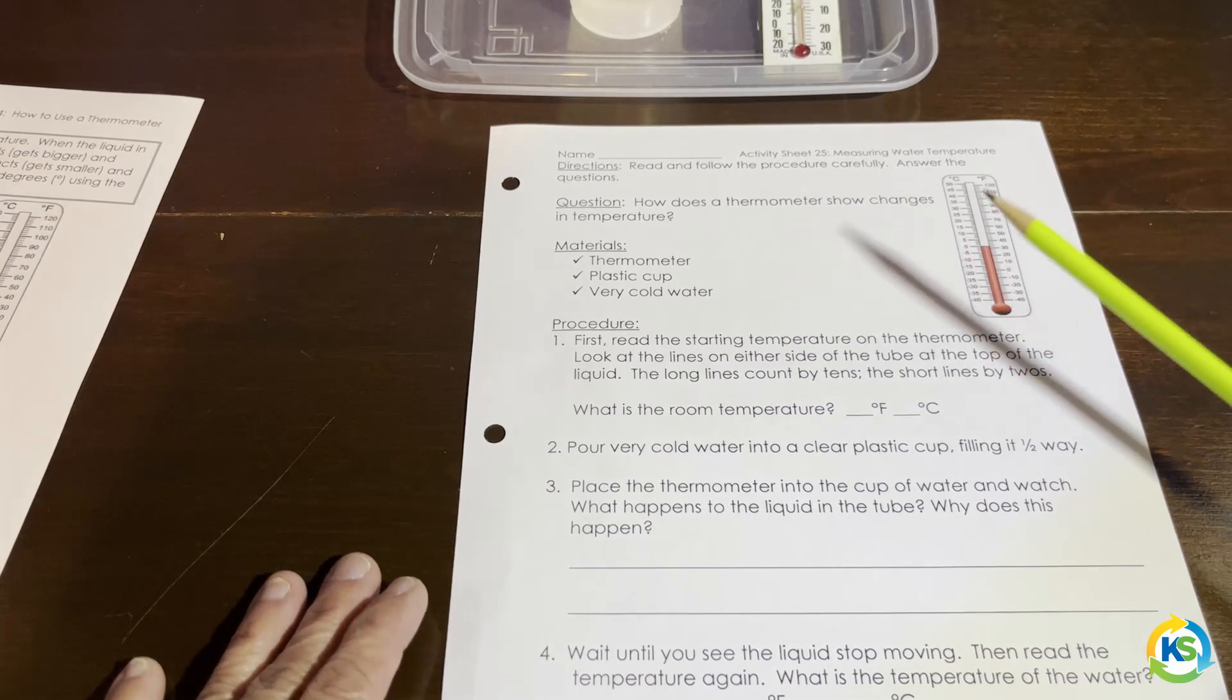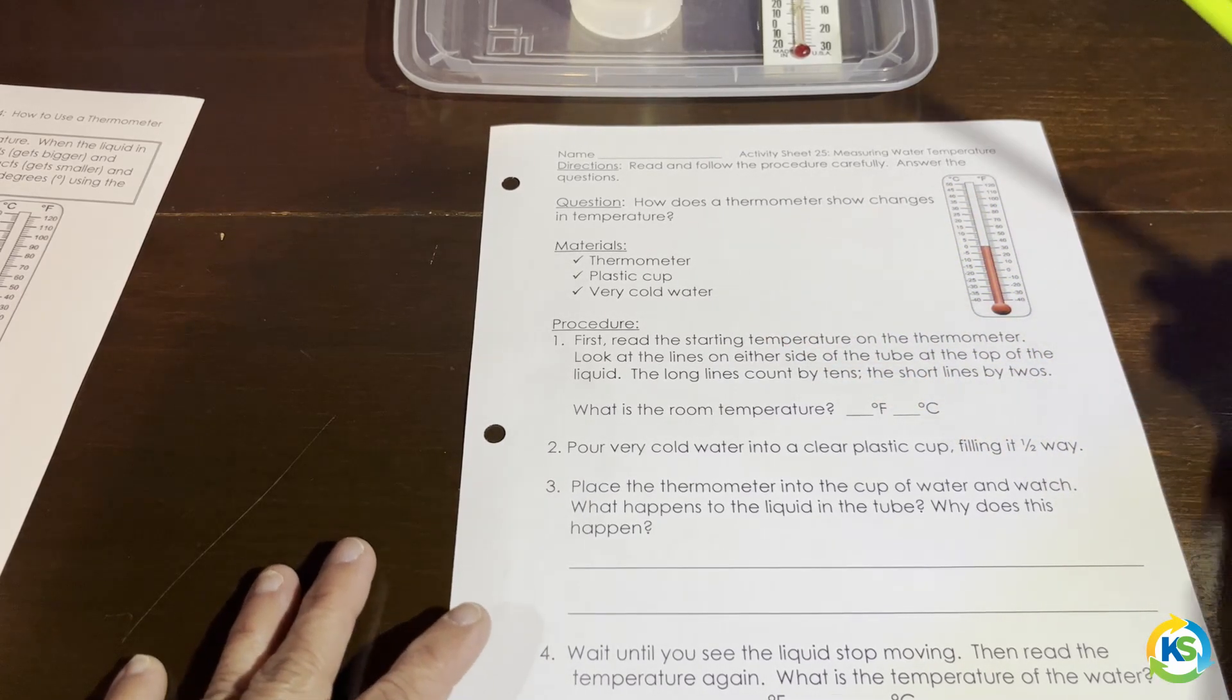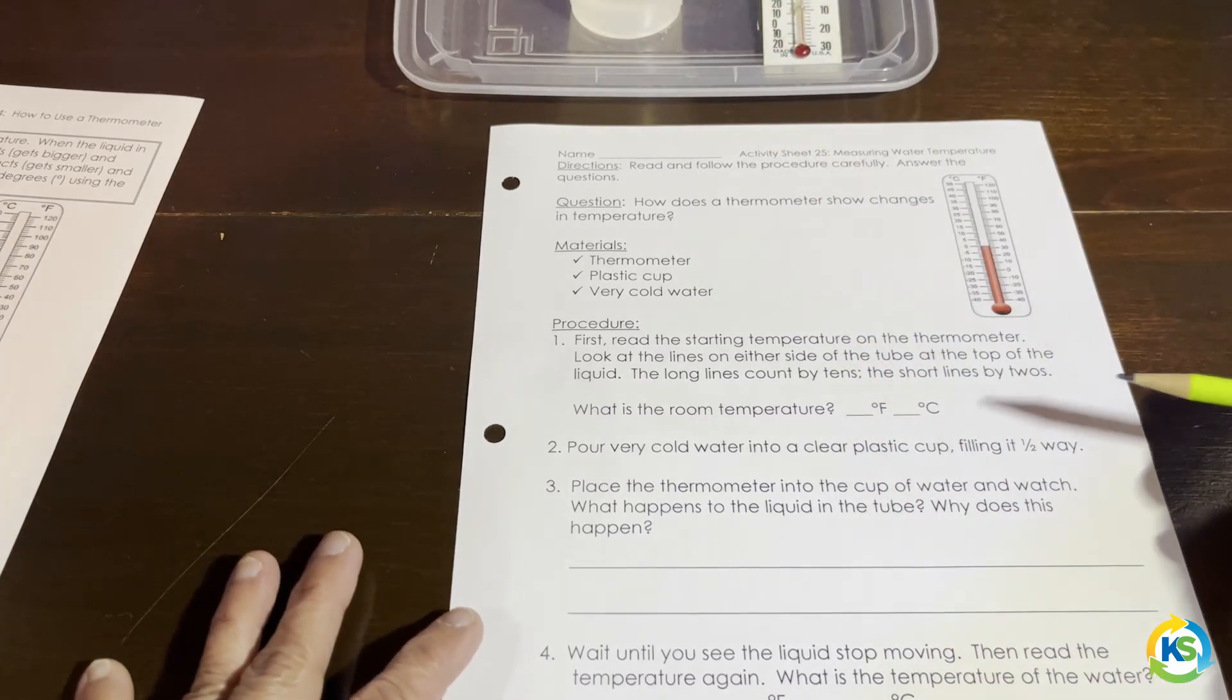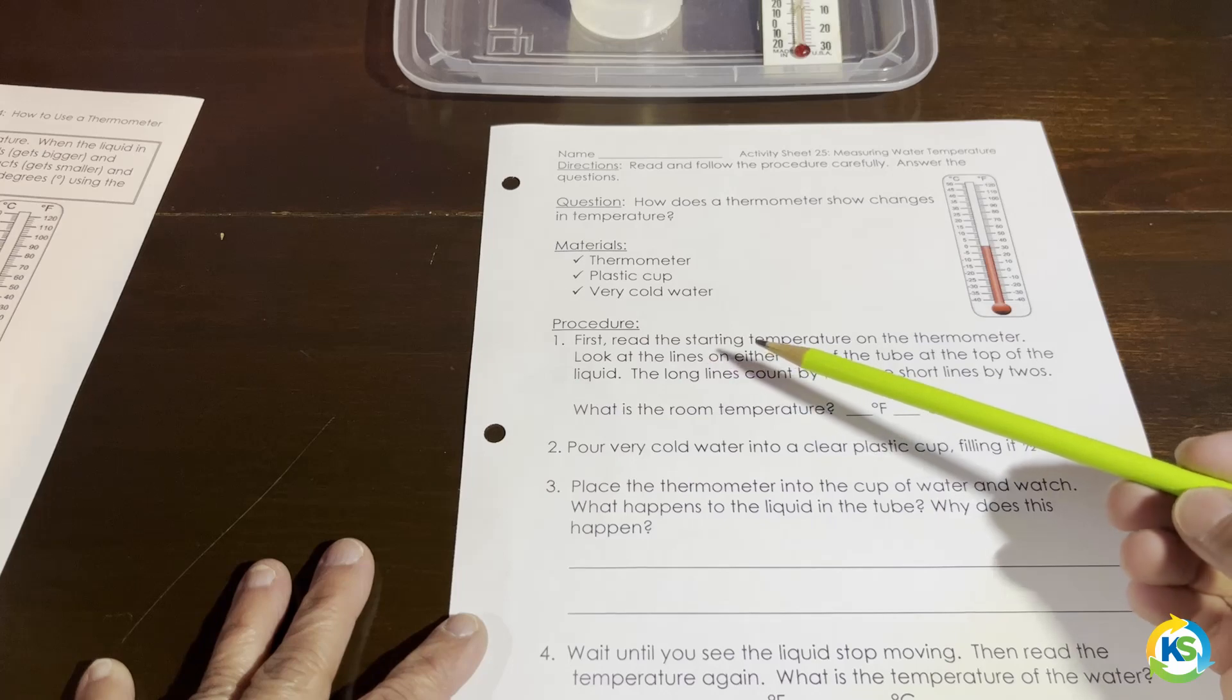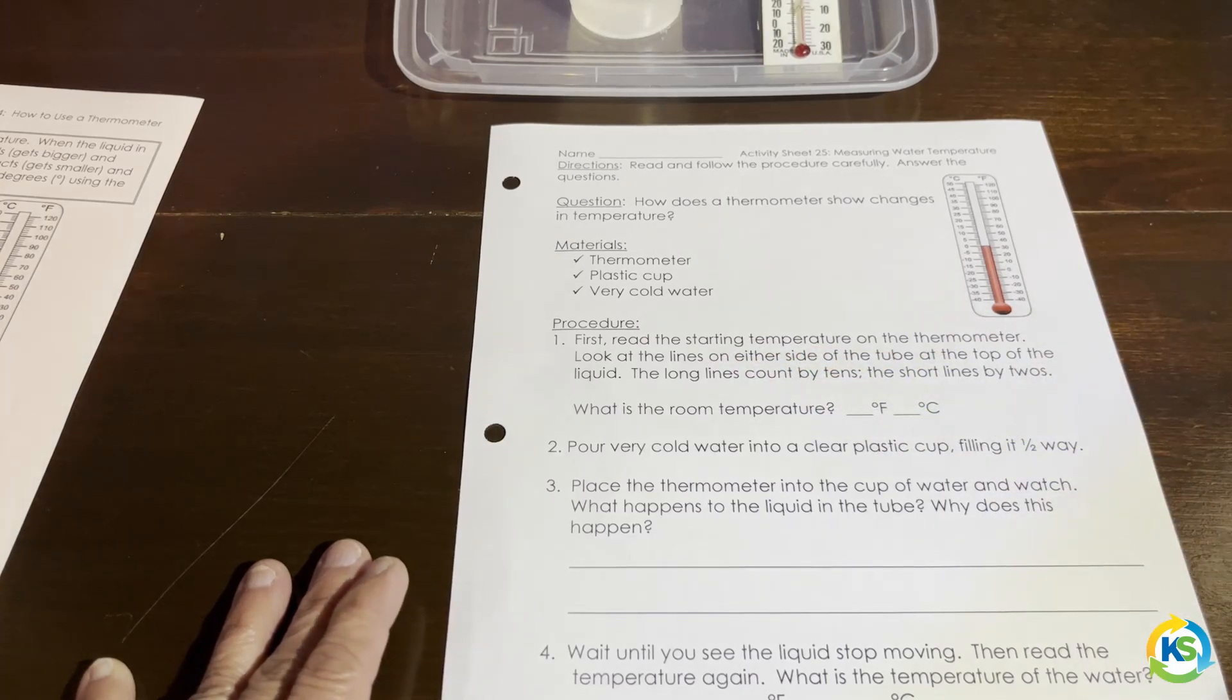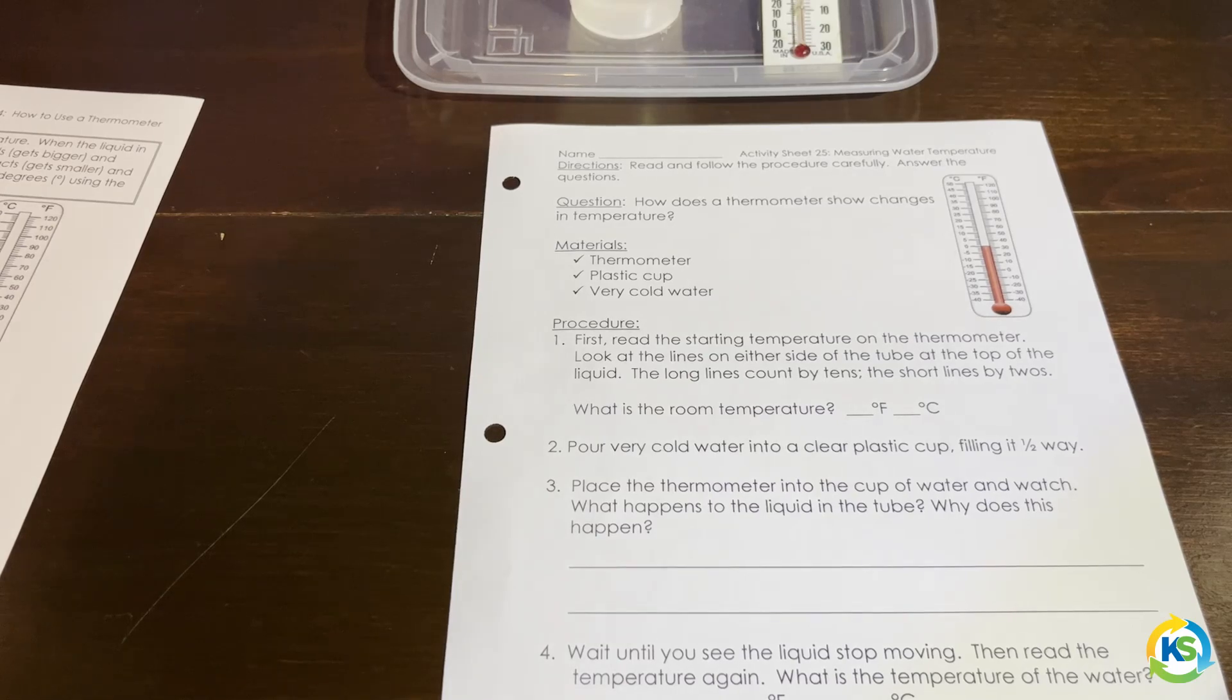The question is, how does the thermometer show changes in temperature? We have a thermometer. We have a cup of very cold water. It says, first, read the starting temperature on the thermometer. Look at the lines on either side of the tube. At the top of the liquid, the long lines count by 10s, the short lines by 2s.